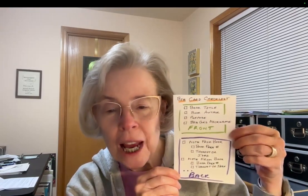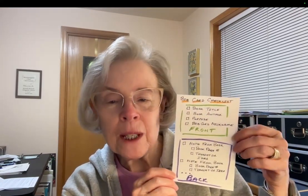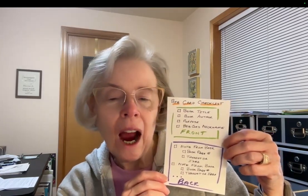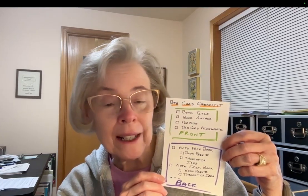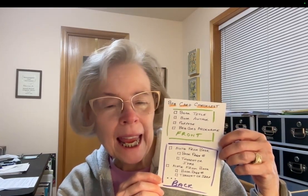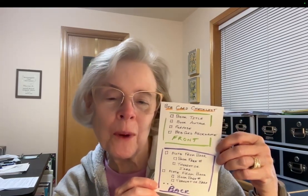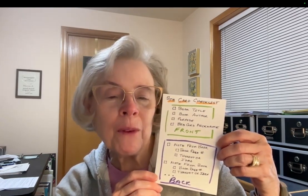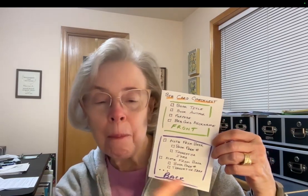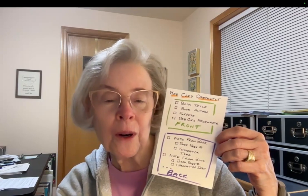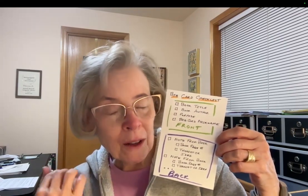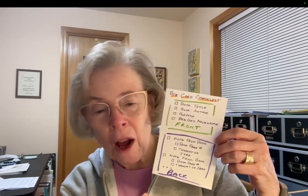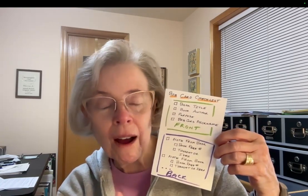We set up rules for shaping a bib card. On the front side, we included the title and author, our reason for wanting to read the book or watch the video, and we gave the bib card a nickname so we could reference it on main cards. Then we turned it over, and as we reviewed the material we took notes, marking the page number in the book or the timestamp in the video, along with notes from the source and possibly our own thoughts.